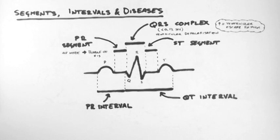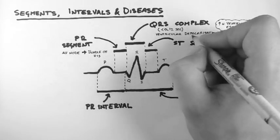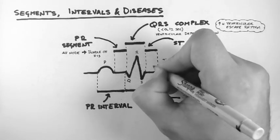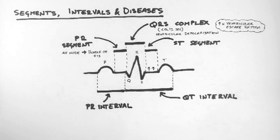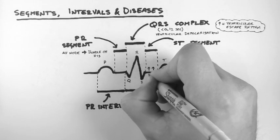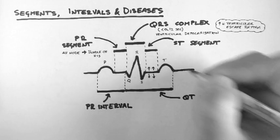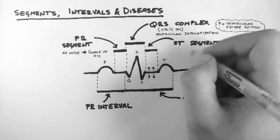The ST segment is really important in emergency medicine because characteristic changes are often seen during a heart attack or angina. The ST segment can be normal or it can be elevated, which means it sits above the baseline on the ECG, or it can be depressed, which means it sits below the baseline.